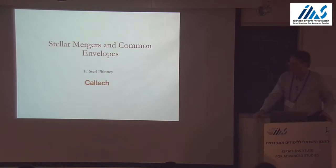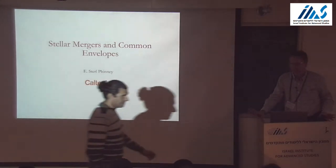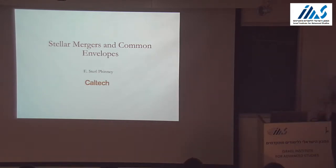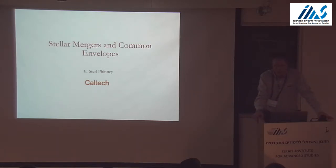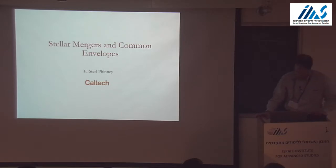Yesterday I told you about single stars, and at the end I warned you that especially for massive stars, but even for solar-type stars, being single is not all that common. Typically for stars like the Sun, binaries are common; for more massive stars, triples, quadruples, sextuples and so on are more typical.